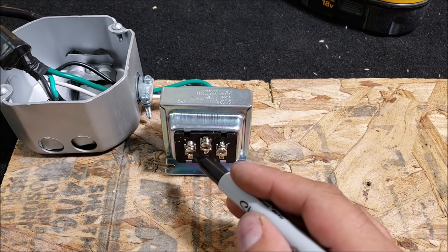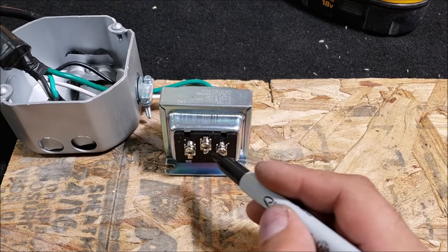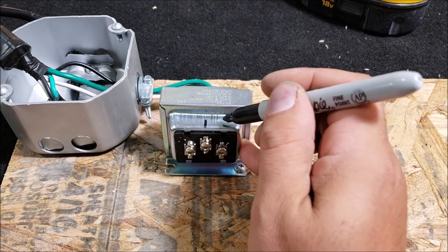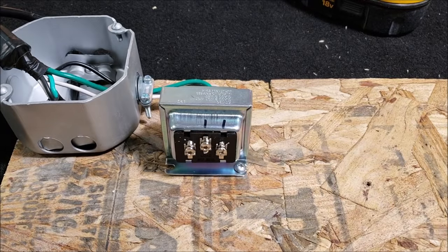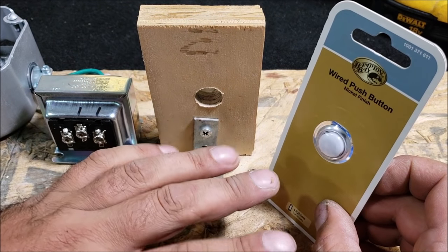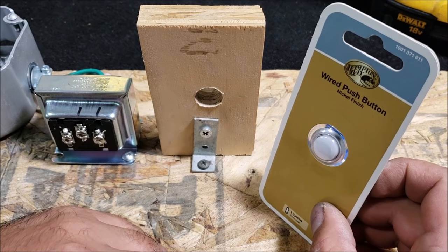Okay, so on the two prong transformer, 16 volts. On this one we got eight across these two, 16 across these two, and then 24 across the far two. So we just want to put some marks here so we know exactly which ones we're using. So we're going to wire it up at first with the front door button, get it all working, and then we're going to add the back door button to it.